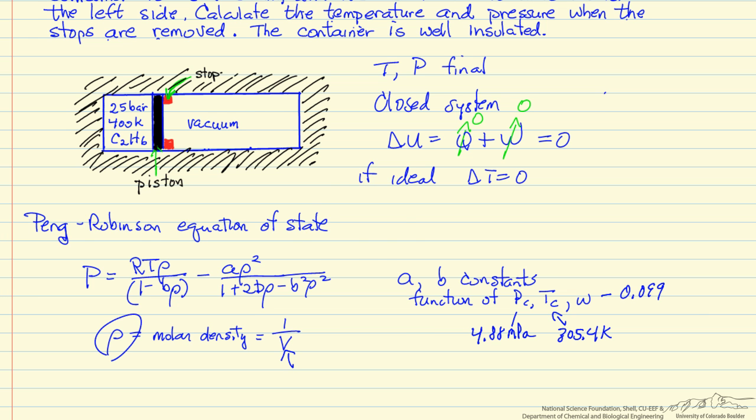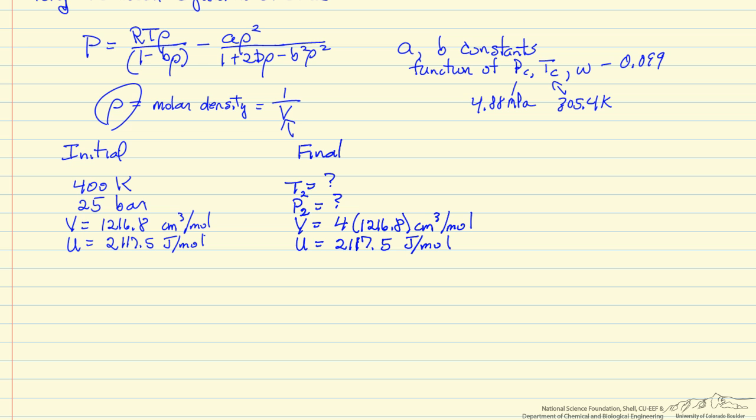What we're going to do is first use the equation of state to calculate our initial volume and internal energy. Once we have that, we know the final internal energy. We know the final volume is four times the initial volume. So we have two state properties—volume and internal energy—which means we have a unique value for the temperature and pressure.